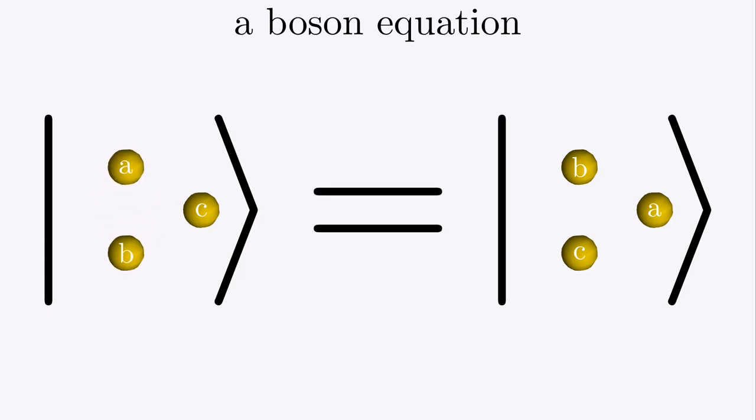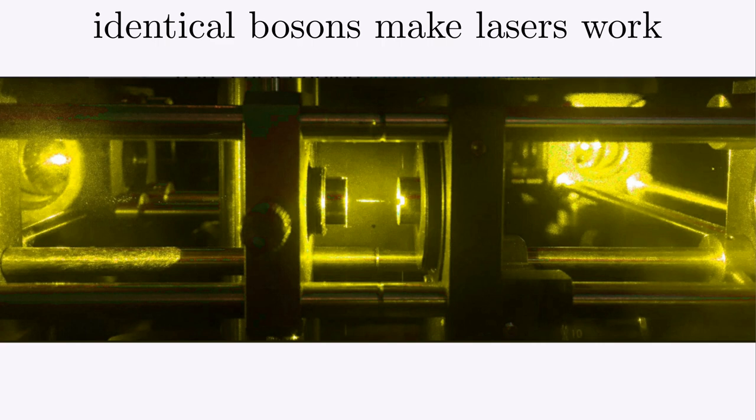You might ask, how do we know the bosons really are the same? Maybe it is like the cherries, and we just didn't look close enough. This is a good question. If we didn't have identical bosons, then lasers just would not work. But this is a story for another time.